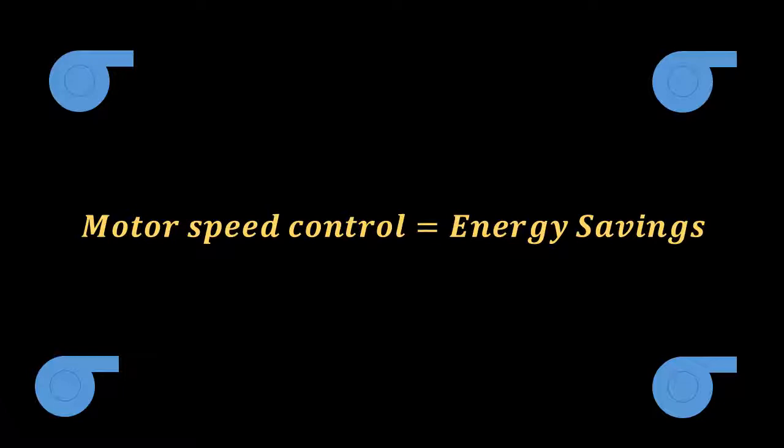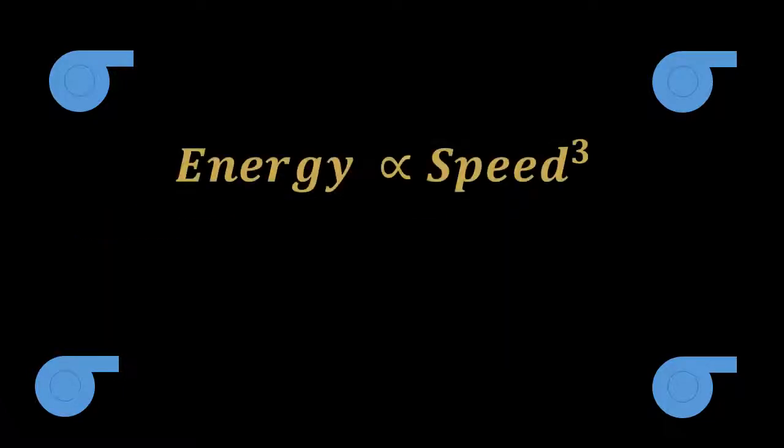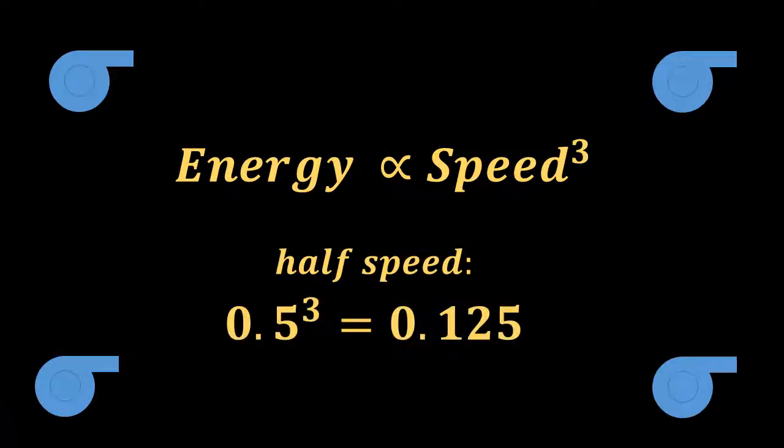For centrifugal pumps and fans, the input energy is proportional to the cube of its speed. Any reduction in speed will therefore have a much larger reduction in energy use. For example, a pump running at 50% of its speed only requires 12.5% of its rated power.